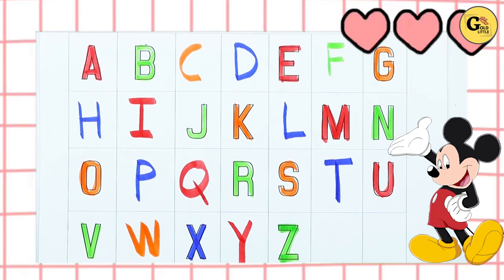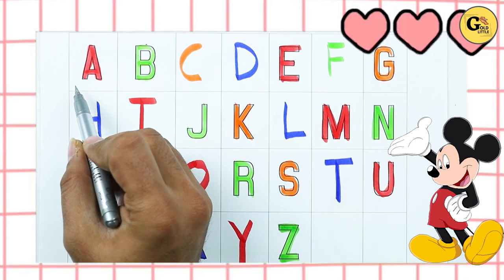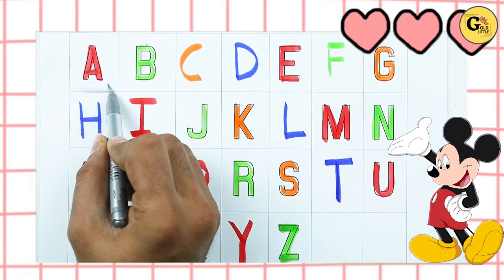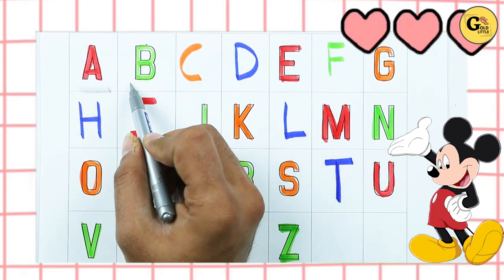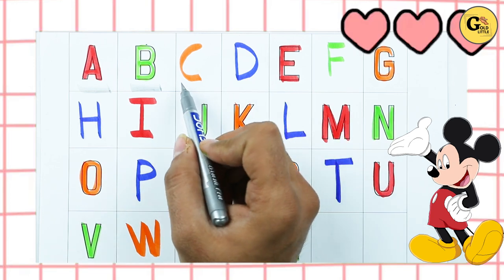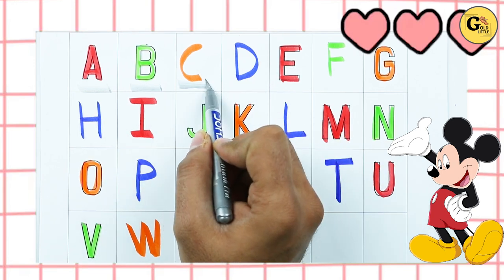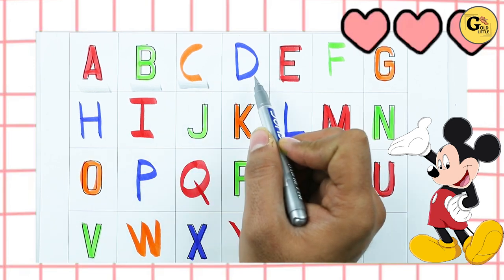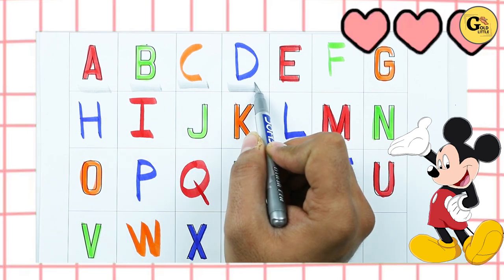Hello friends, today we learn alphabet, capital alphabets. A. A for apple. B. B for ball. C. C for cat.